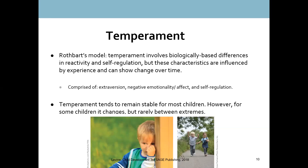In Rothbart's model, temperament is comprised of three major components: extroversion, negative emotionality or affect, and self-regulation. We will be talking about self-regulation more in the next video, as it is a variable that becomes increasingly important as children get older. Those with better self-regulation skills tend to do better in school and socially. And that concludes our brief look at temperament.